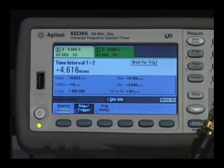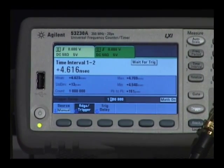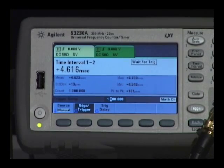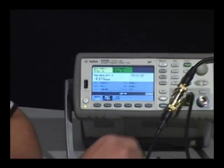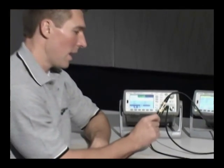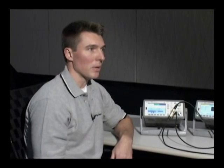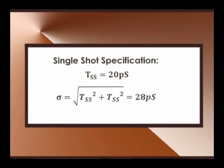But what's really important is the standard deviation — here we see it's 13 picoseconds. Now if we take the single shot resolution of channel one, which is 20 picoseconds, and find that we have the exact same resolution on channel two — another 20 picoseconds — to combine those you simply do a root sum square of 20 picoseconds with 20 picoseconds to arrive at the standard deviation spec of 28 picoseconds.